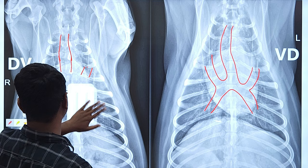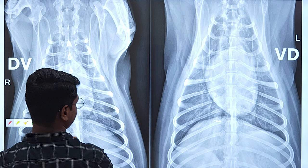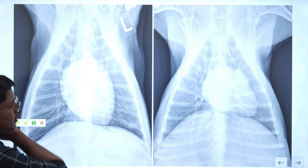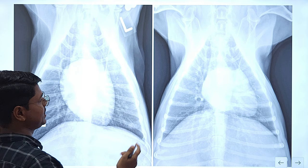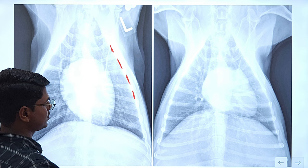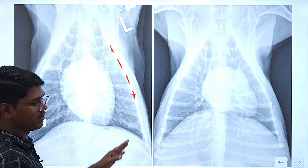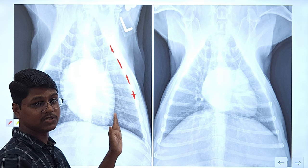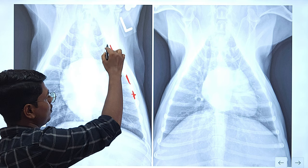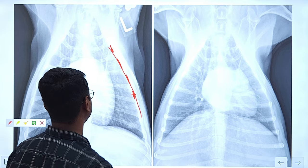Next, the thoracic wall. Here you can appreciate the extra-thoracic musculatures. If any problem or discontinuity is present, you can identify it here. Sometimes you may find cases of pneumothorax or flail chest, where the dorsal ventral or ventral dorsal view can be very helpful rather than the lateral views.